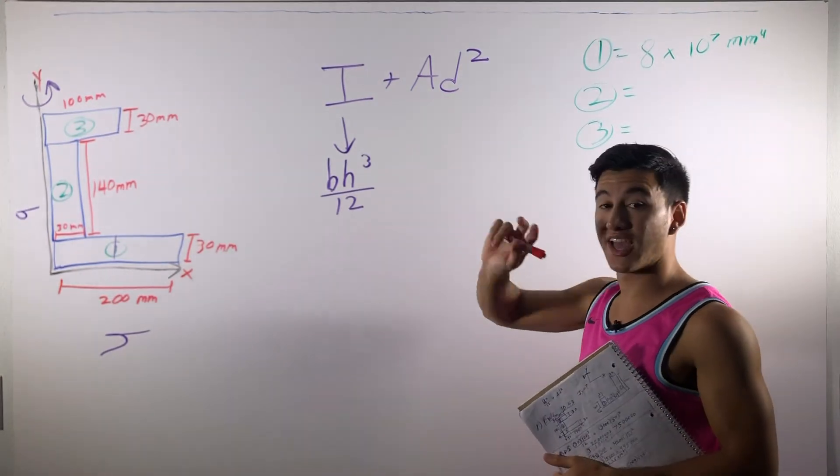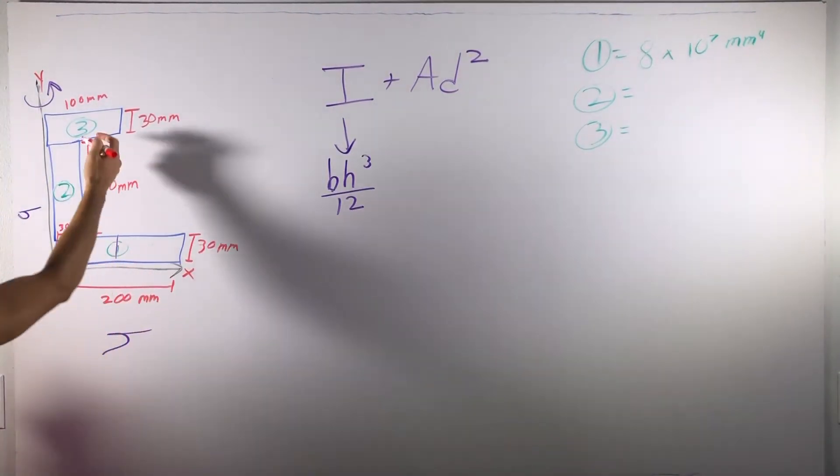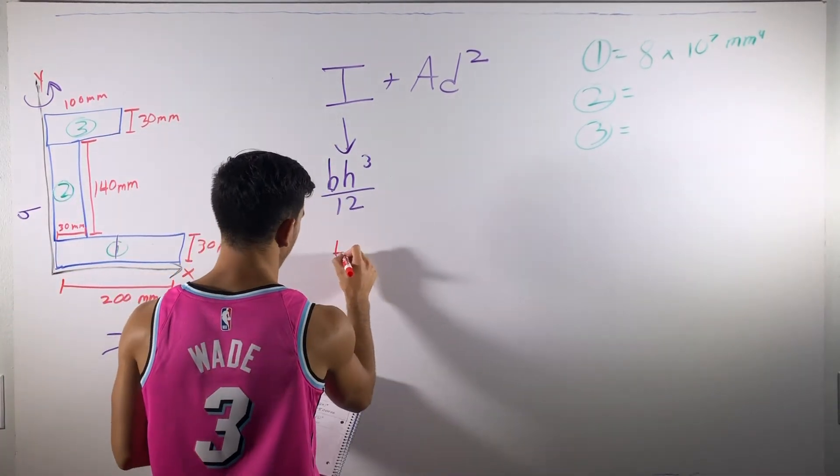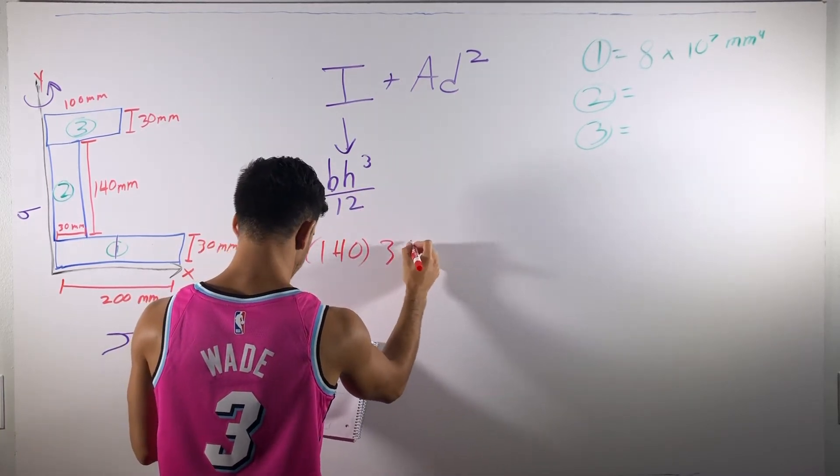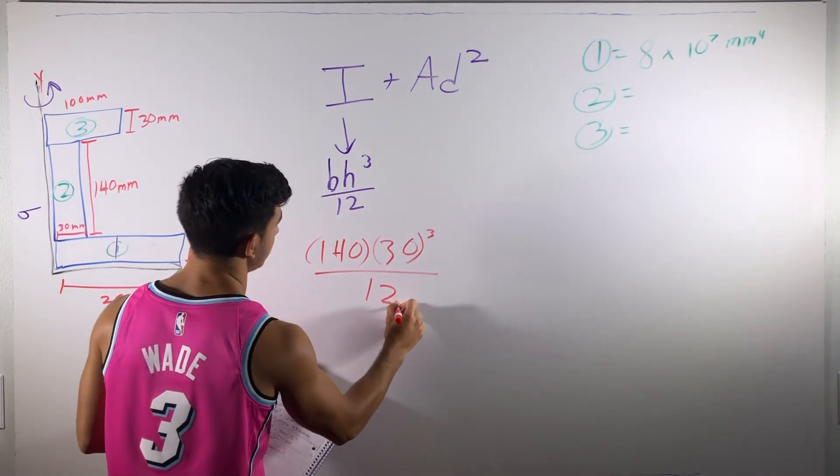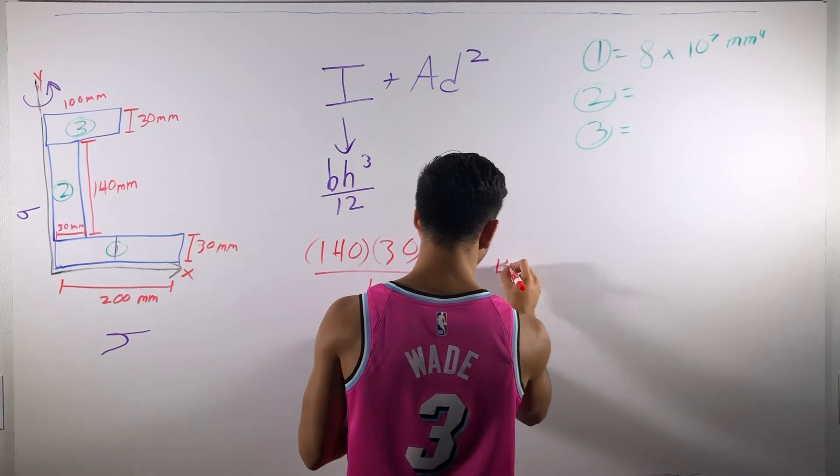So, now let's take a look at section two. So, the base of our section two is 140 and the height is 30. So, we're going to write that down: 140 for the base times the height of 30. That's to the third divided by 12 plus our area, which is just base times height, comes out to be 4200.